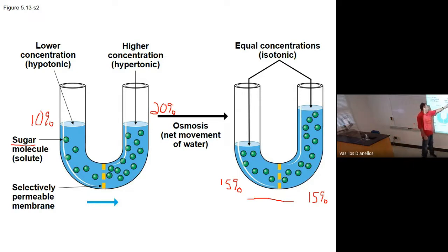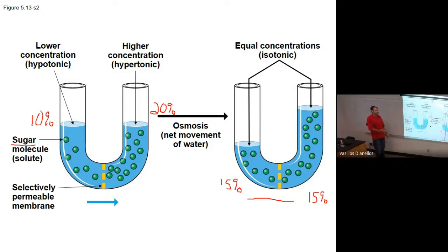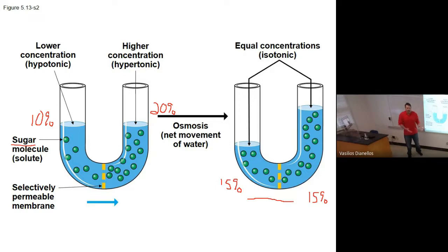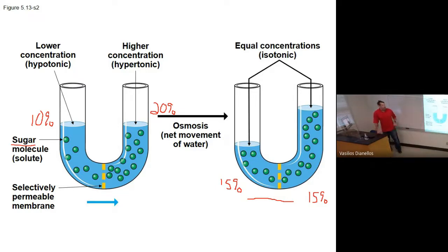You definitely need to know those terms. Here's how I remember it: when someone says a kid is hyper, they mean high energy — they have a lot of energy. So hyper means more. The opposite of that is less. And as you should know, the prefix iso means equal — like isotope, isomer, all those words you've already learned.